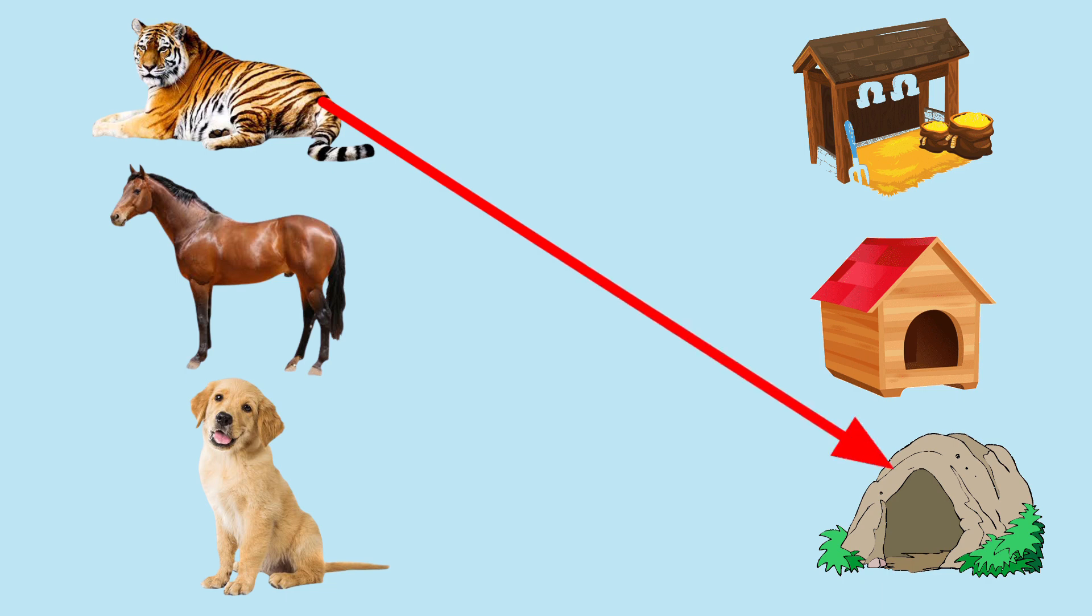Next, horse. Horse lives in stable. Next, dog. Dog lives in kennel.